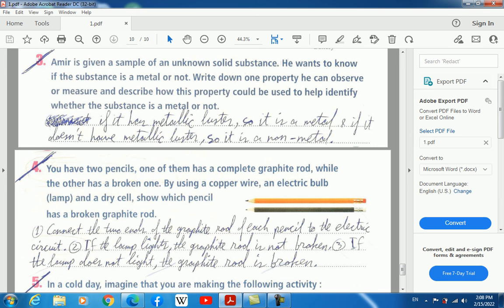Amir is given a sample of an unknown solid substance. He wants to know if the substance is a metal or not. Write down one property he can observe or measure and describe how this property could be used to help identify whether the substance is a metal or not. If it has metallic luster, so it's metal, and if it does not have metallic luster, so it will be a non-metal.